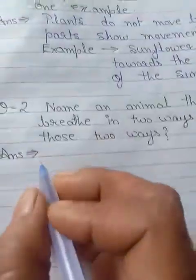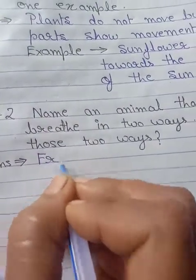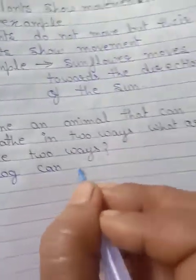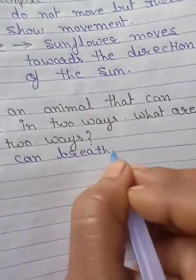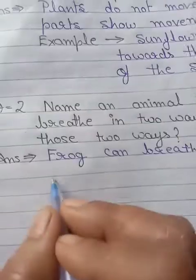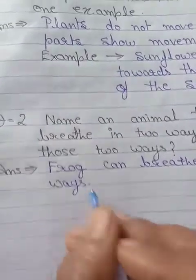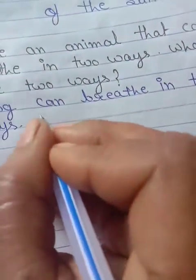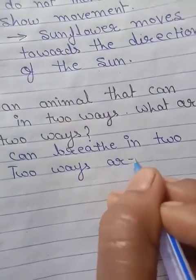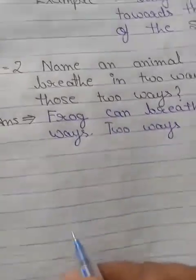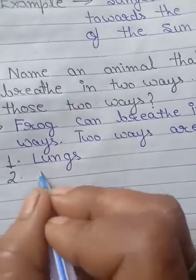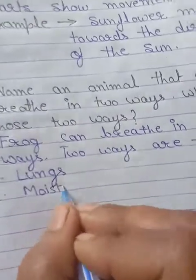Answer: Frogs can breathe in two ways. The first way is through lungs, and the second way is through moist skin.